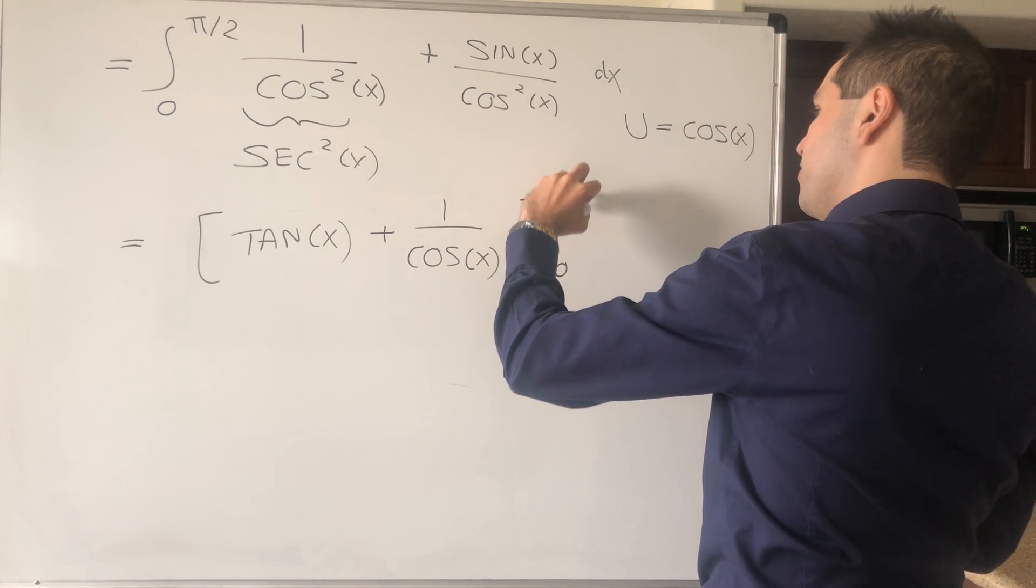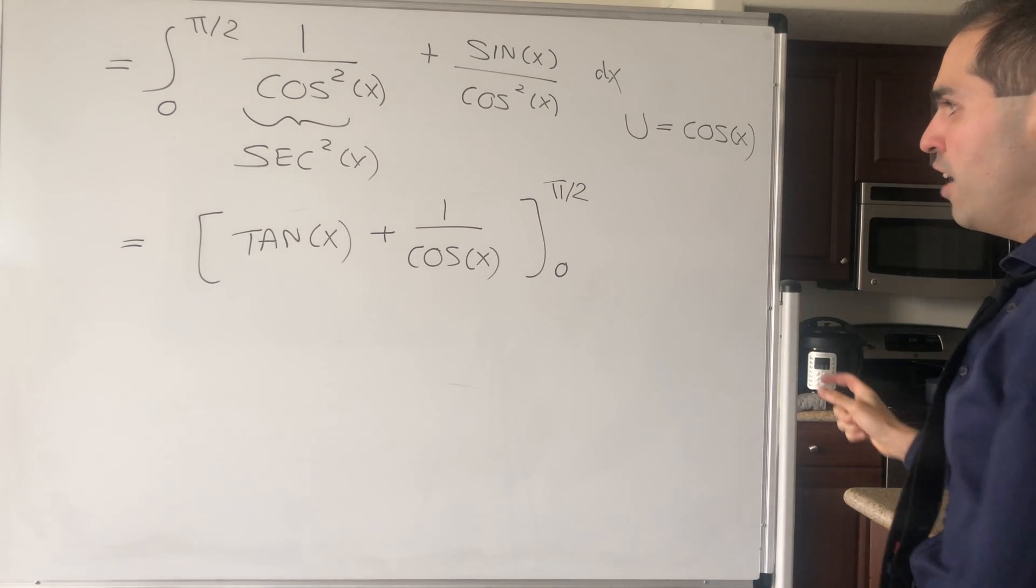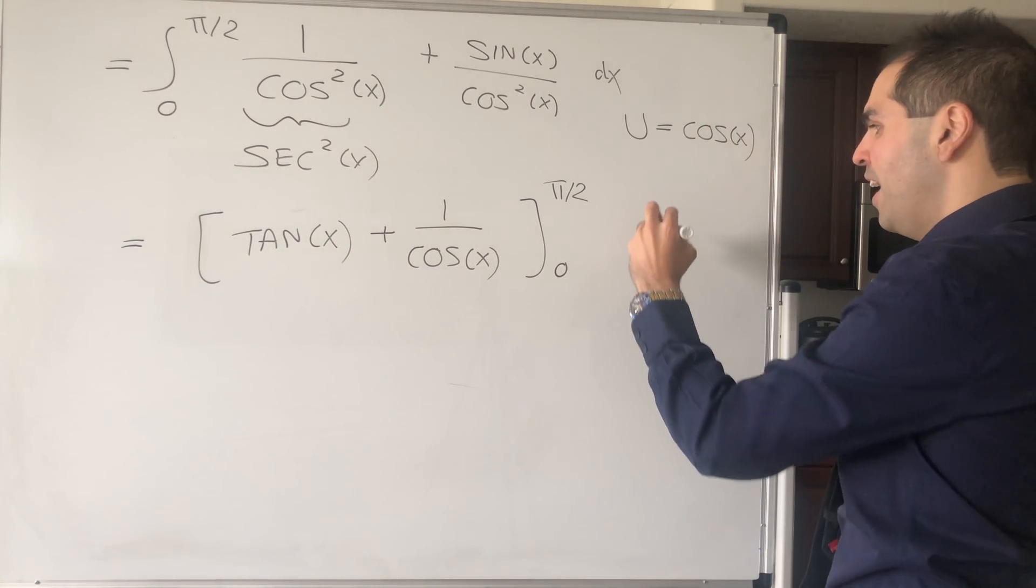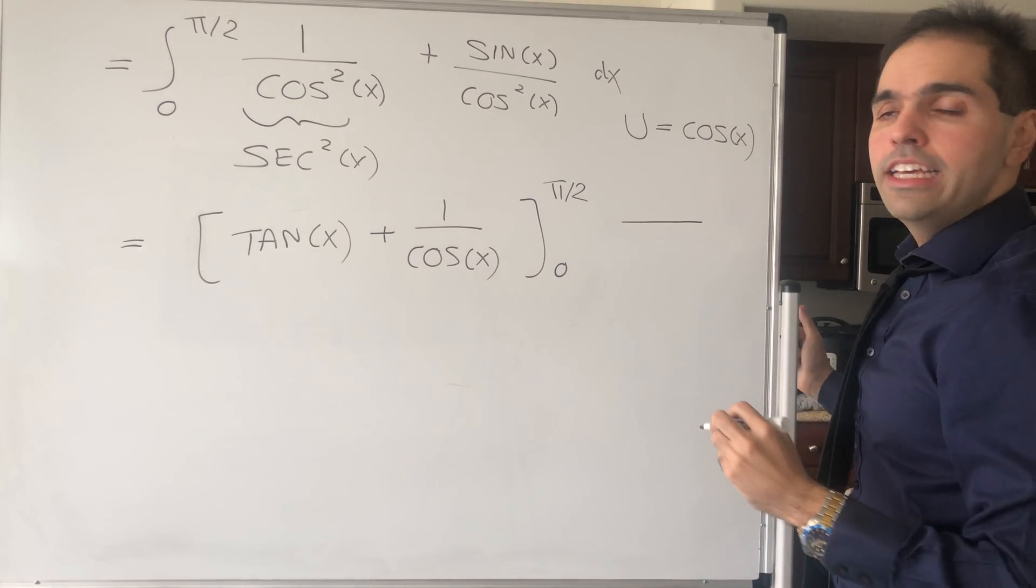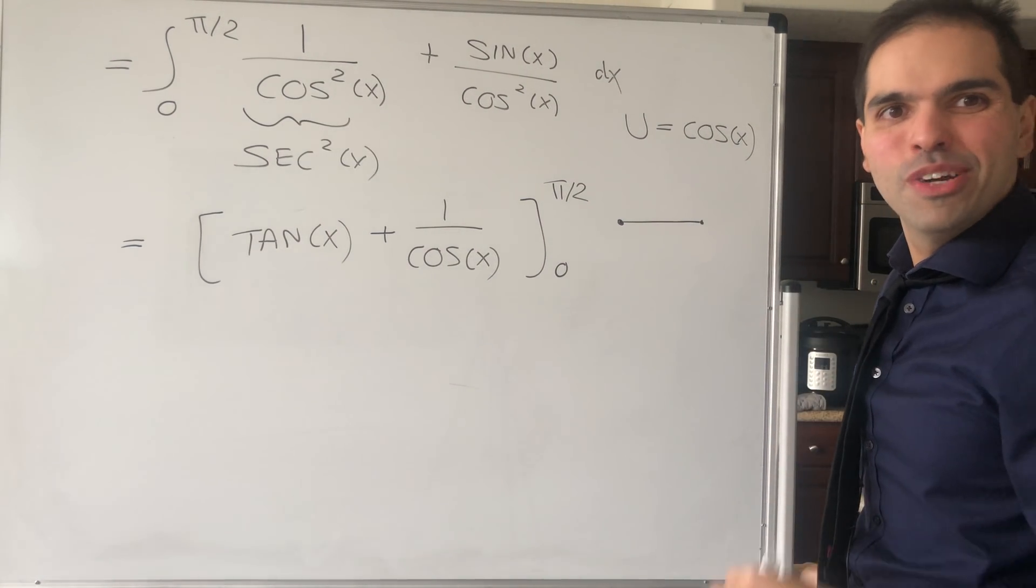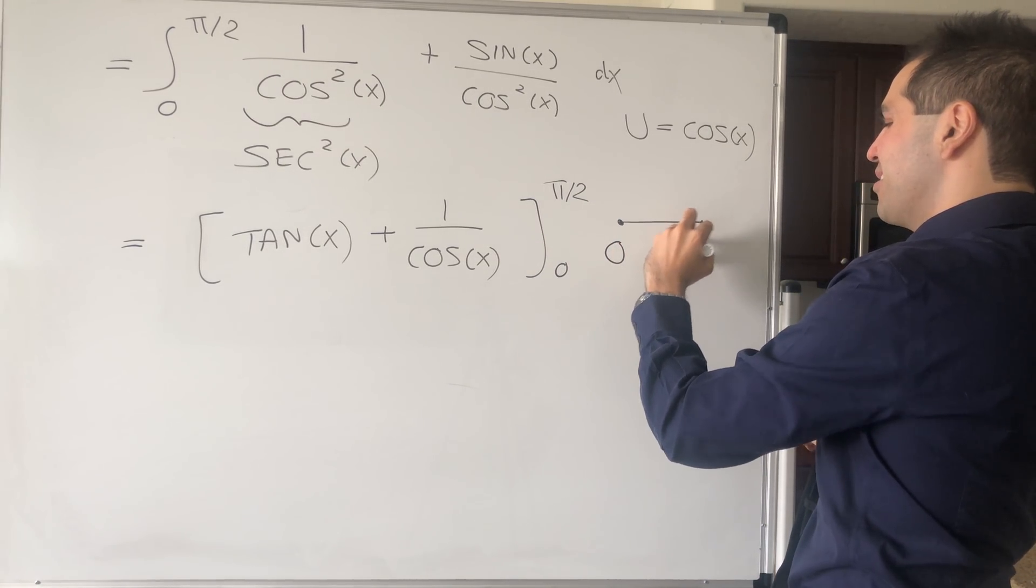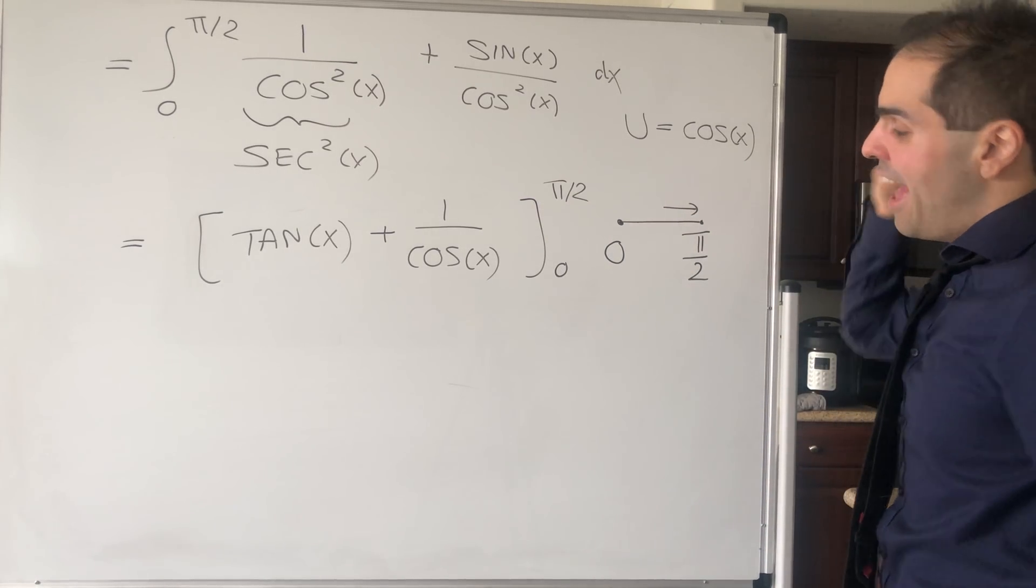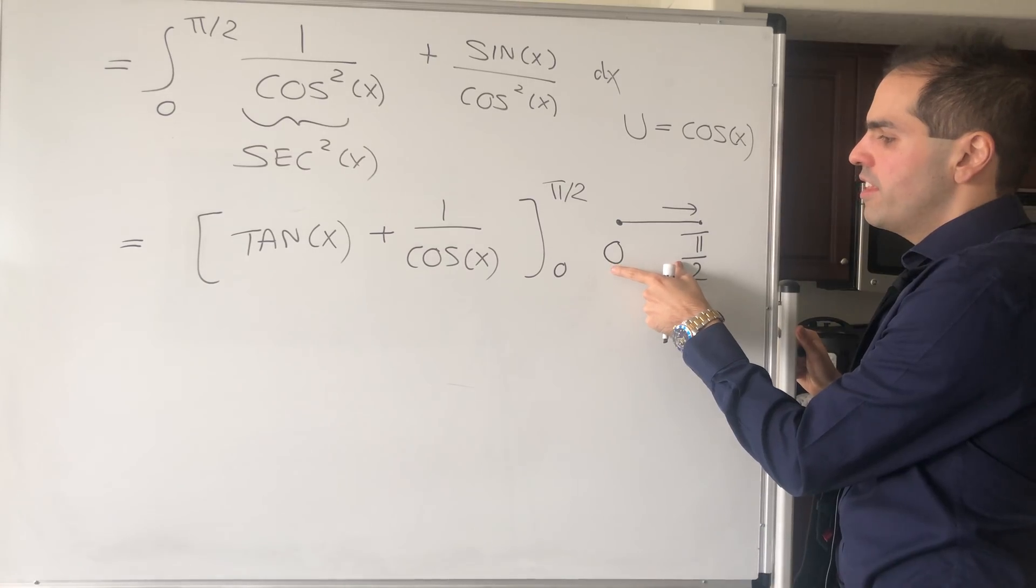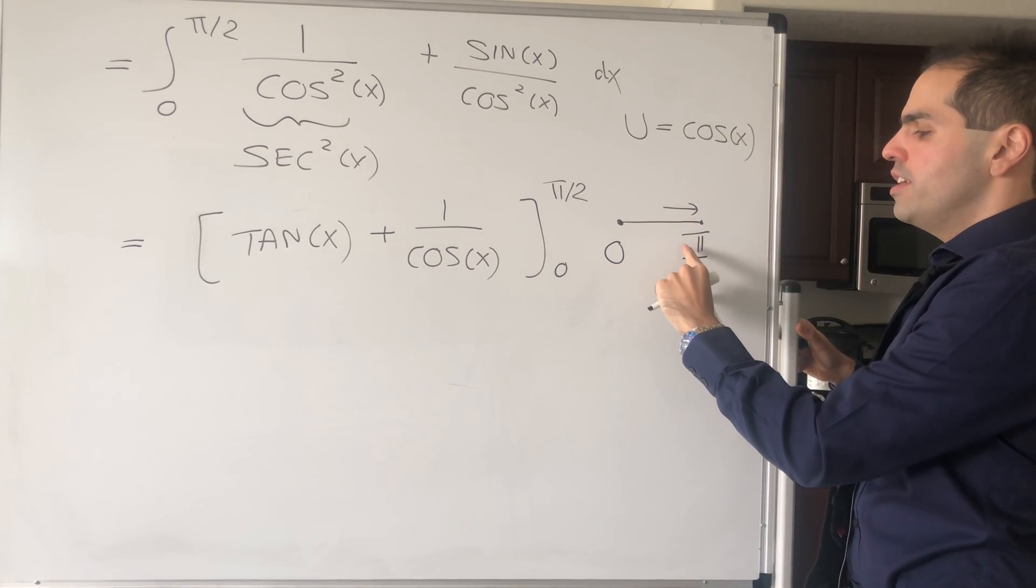Very important detail now: if you plug in π/2 into this tangent, it's undefined. What this really is is what's called an improper antiderivative in some sense—not quite an improper integral, but for the antiderivative you have to watch out. Since we're dealing with the interval 0 to π/2, what we really have to do is take the limit as x goes to π/2 from the left.